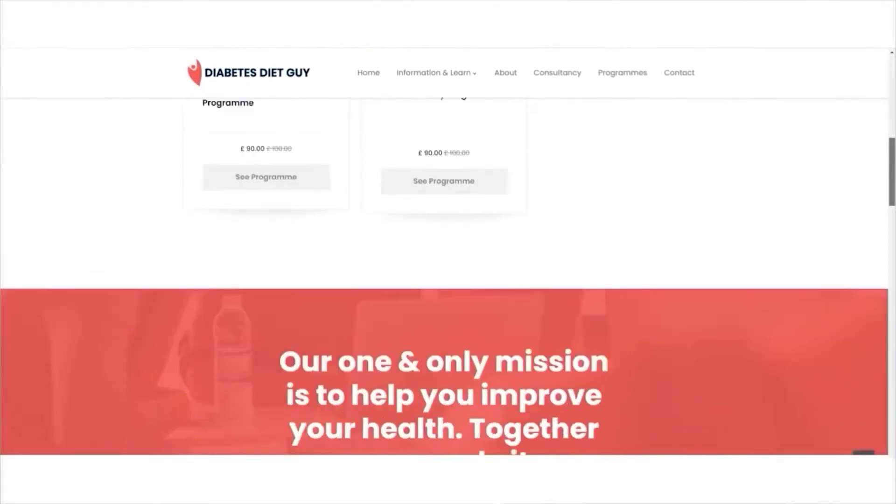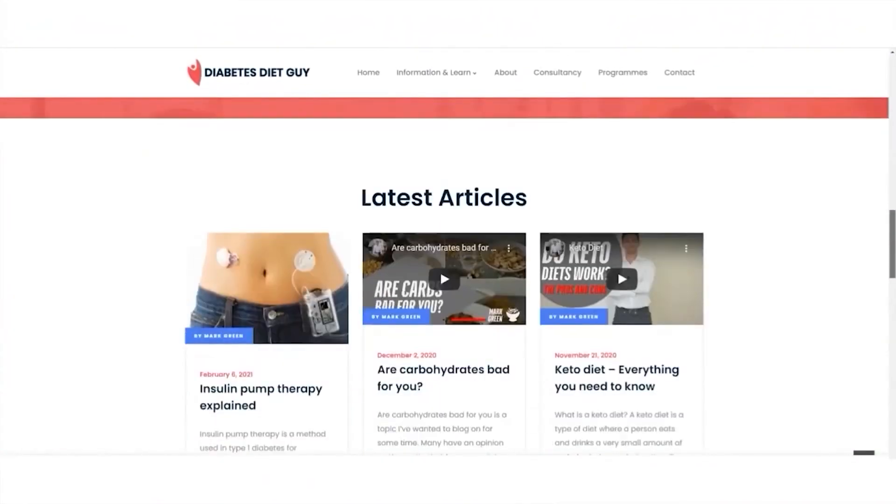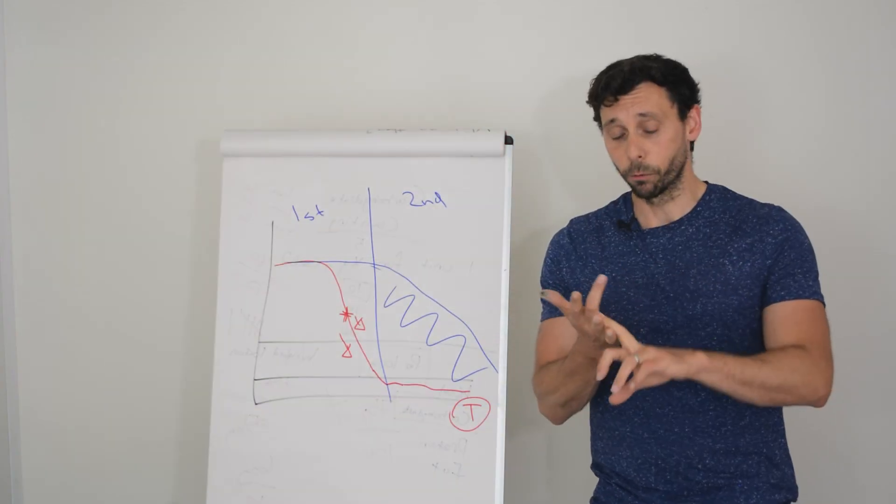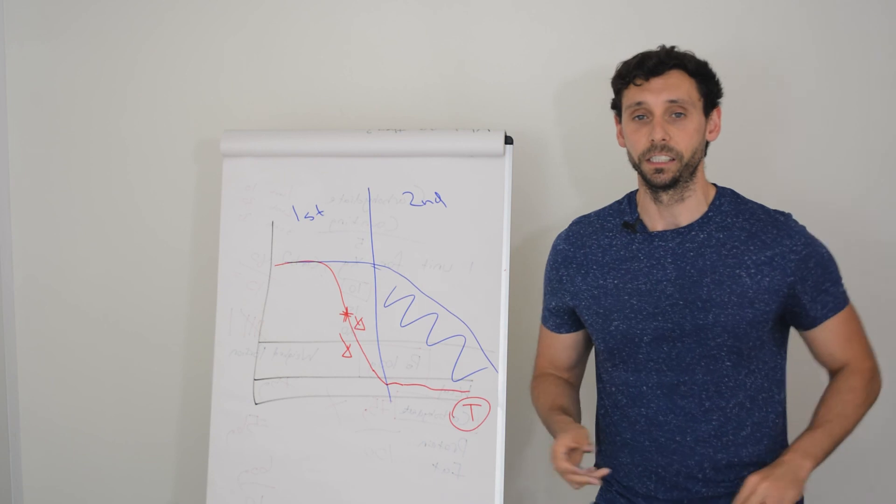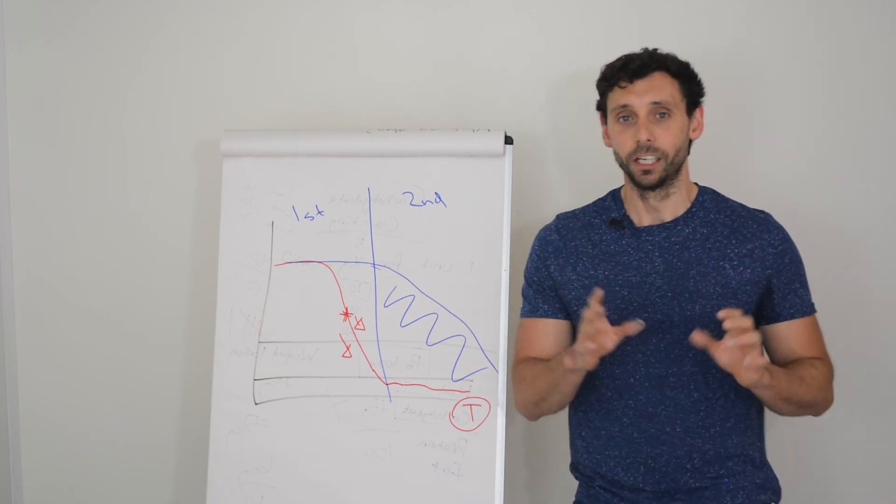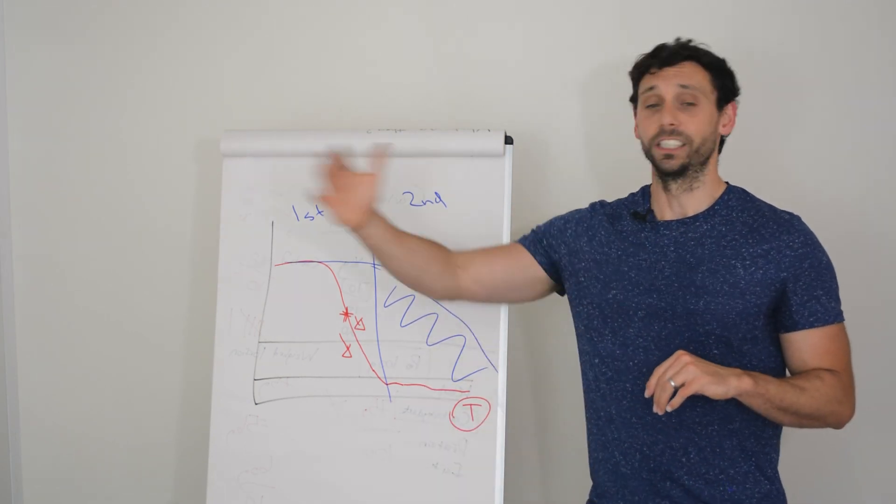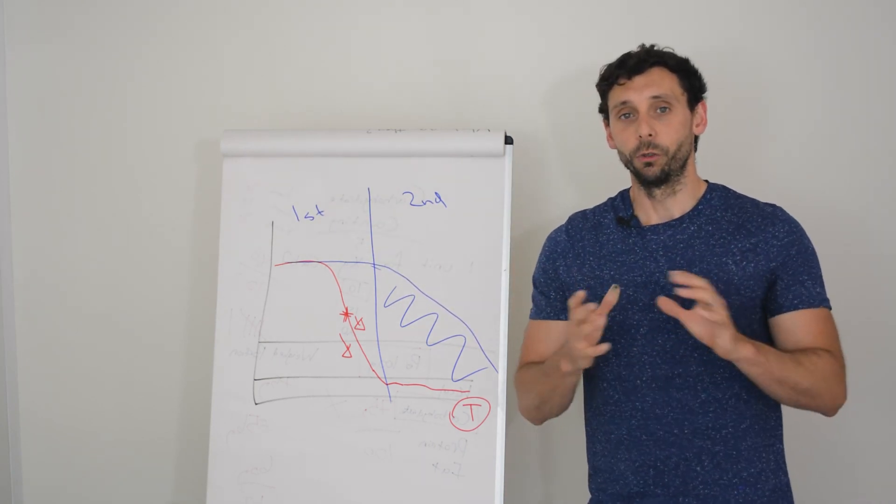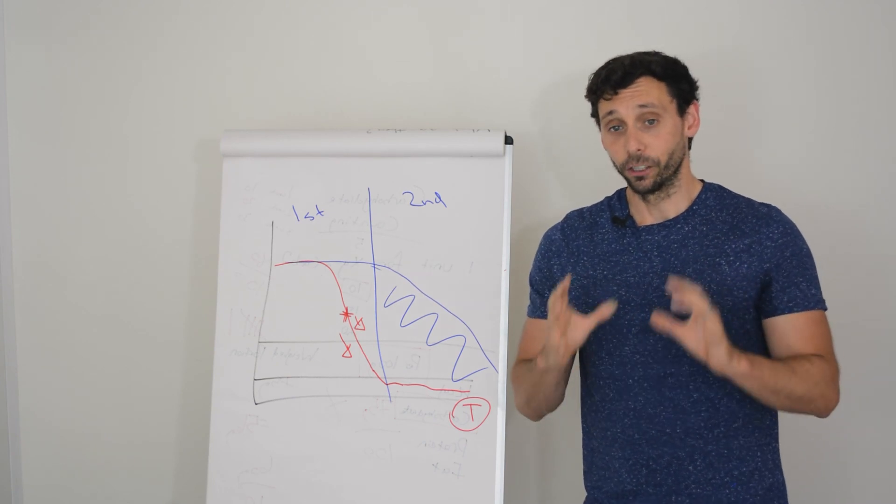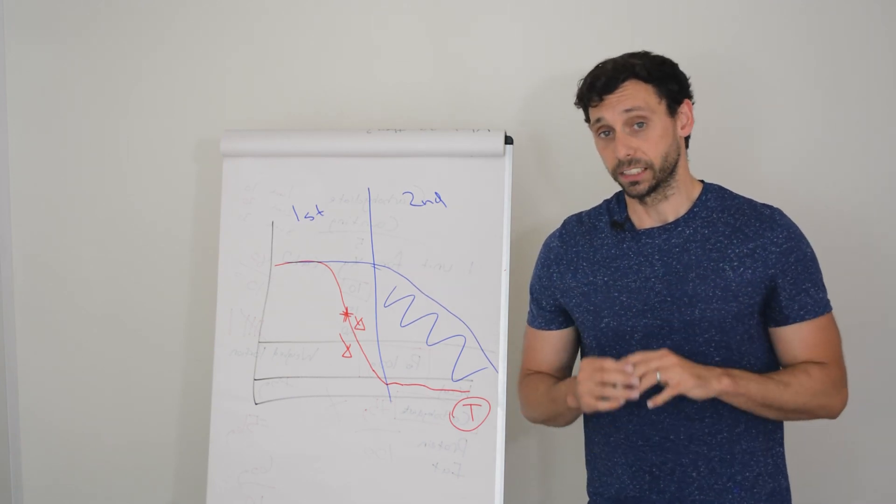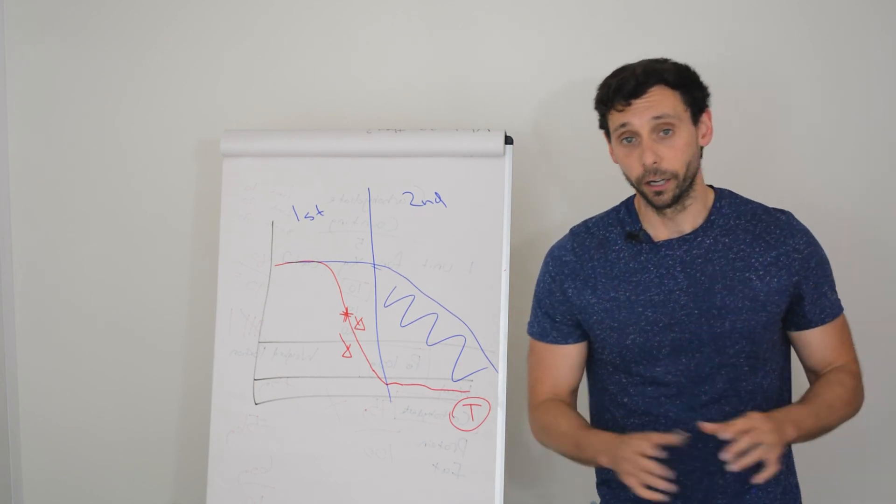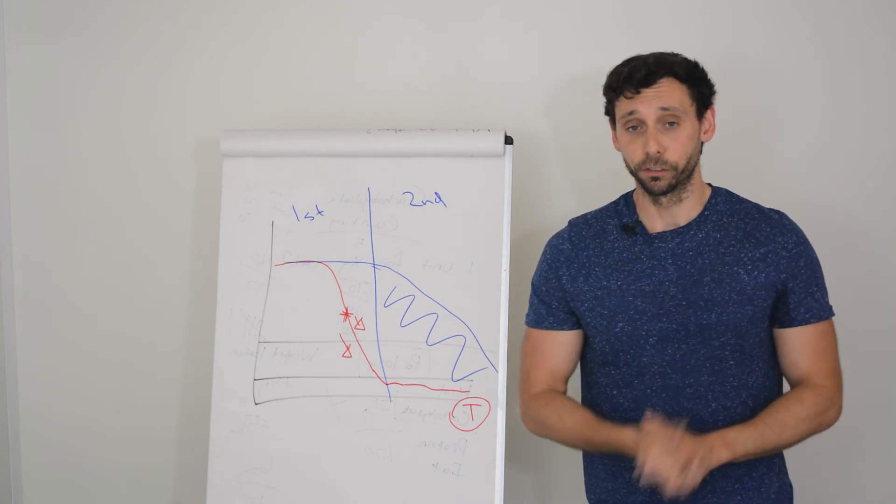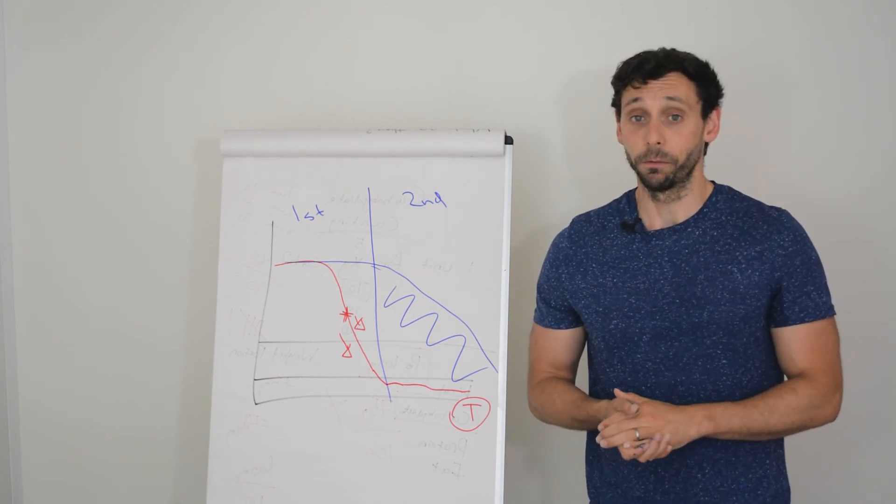Remember to head over to diabetesdietguide.com if you need any extra information or a helping hand. We do have programs. We have a type 2 recovery program. We have a weight loss program and we have a type 1 glucose stability program. Inexpensive 90 pounds compared to a personal training session, which is say 40 to 60 pounds per hour. It's pretty good value. But if you do need an extra helping hand, we do one-to-one consultancy, but we'll sit down with you and look at your individual circumstances. And that we do both one-to-one pay-as-you-go and also a three-month program. Check it out. No obligations. And there's also a bunch of free information there as well. So check it out. Check out the blog anyway.